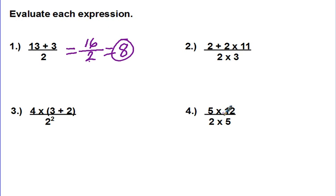Let's work another one. 5 times 12 is 60. Work the bottom. 2 times 5 is 10. Now you're ready to work it. 60 divided by 10 is 6.